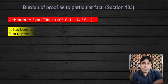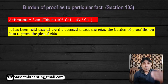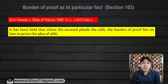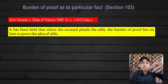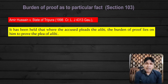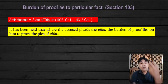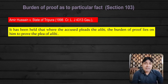In Amir Hussain versus State of Tripura, it has been held that where the accused pleads the alibi, the burden of proof lies on him to prove the plea of alibi. The court says that whenever the accused pleads the defense of alibi, the burden of proof lies on the accused to prove it. Agar accused yeh keh raha ho ki offense jab hua woh kahin aur tha — spot pe tha nahi, woh city mein bhi nahi tha — that is called plea of alibi. Defense of alibi mein accused kehta hai ke jab offense hua woh wahan tha hi nahi — toh burden of proof lies on the accused to prove that he was elsewhere at the time of the offense.